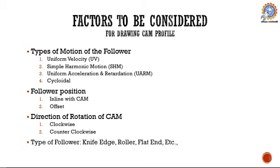We need to take care of the following factors while drawing any cam profile. First and foremost: the types of motion of the follower. In the previous presentation I clearly mentioned how to draw the motion of the follower — we are considering uniform velocity, simple harmonic motion, uniform acceleration and retardation, and cycloidal motion. After knowing that, we consider whether the follower position is inline with the cam axis or offset, the direction of rotation of the cam (clockwise or counterclockwise), and what type of follower is being used — knife edge, roller, or flat face.